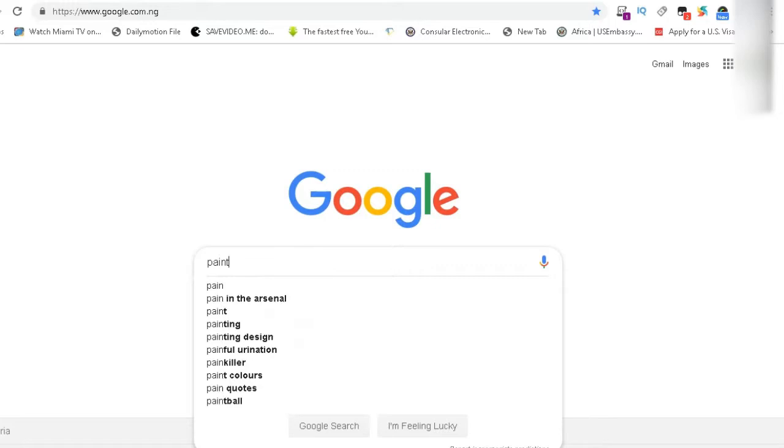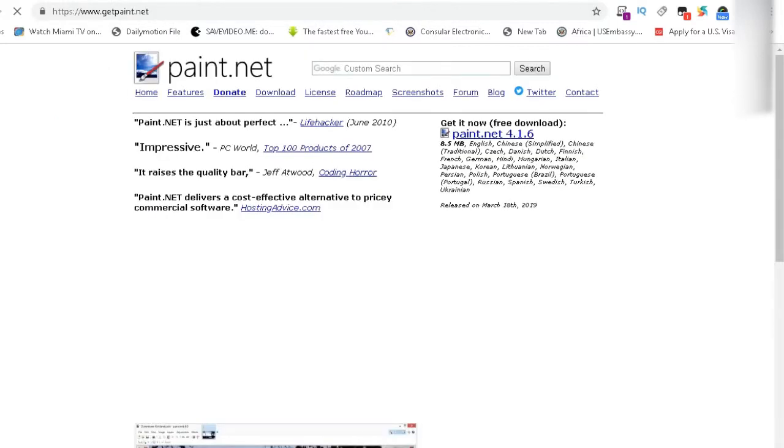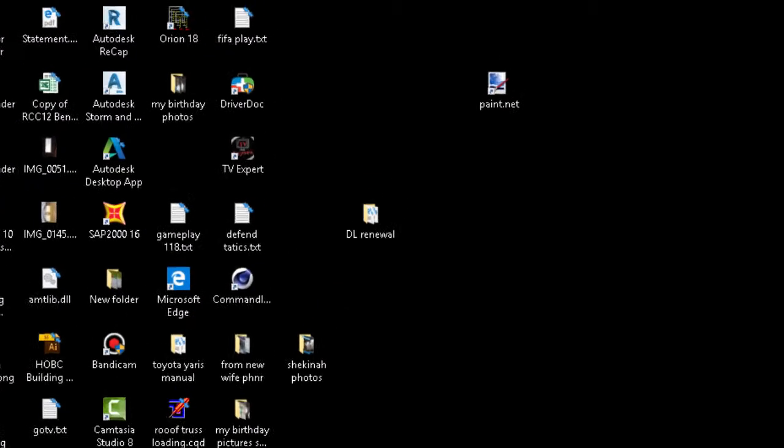On the search bar, type paint.net. Locate the official website, then download the free version. Install on your PC.